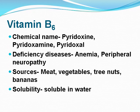Vitamin B6: its chemical name is pyridoxine, pyridoxamine, or pyridoxal. Deficiency diseases include anemia and peripheral neuropathy. Sources include meat, vegetables, tree nuts, and bananas. Solubility: it is soluble in water.